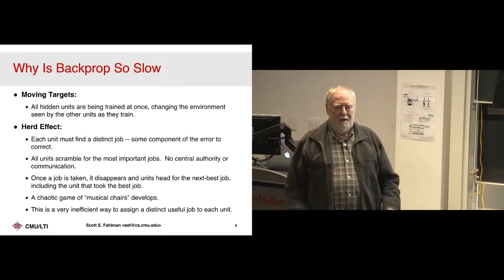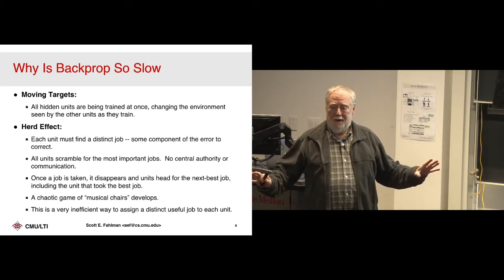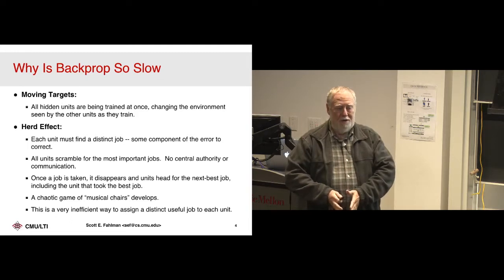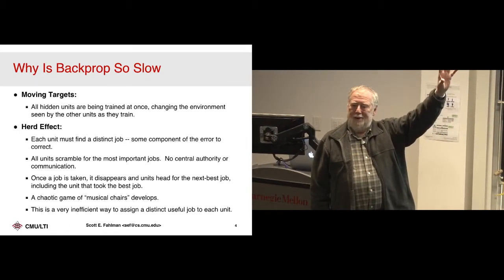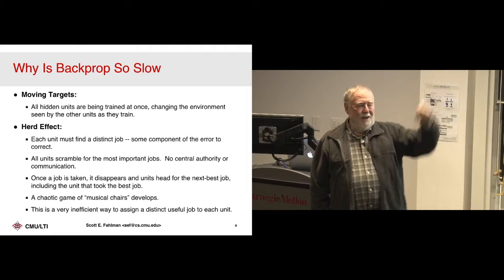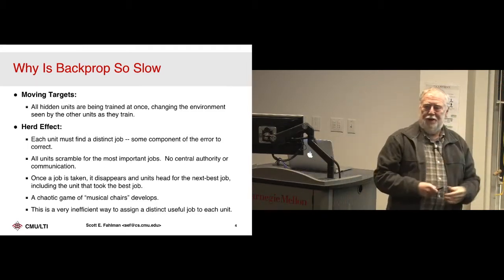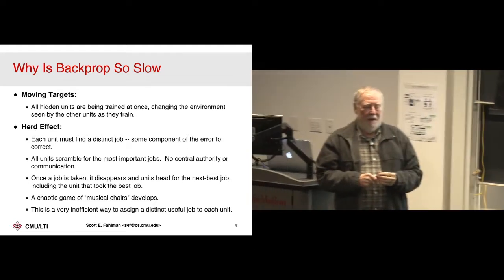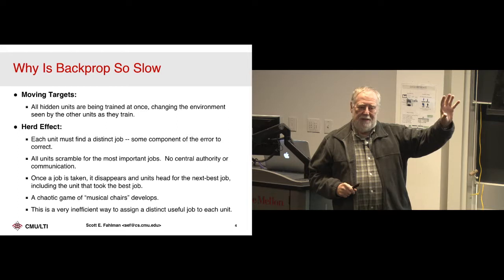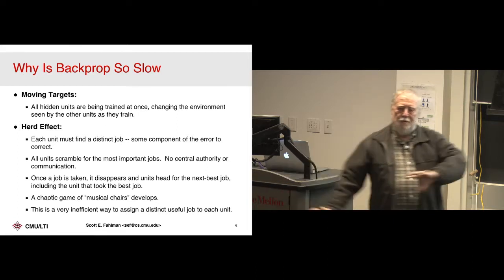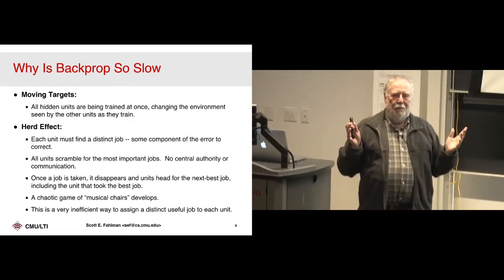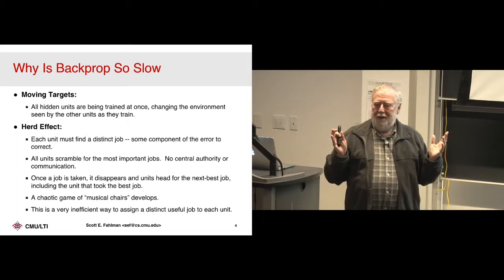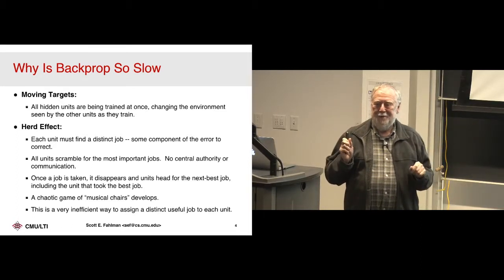If there are multiple hidden units in a layer, you want them all to be doing different jobs. Then you can cancel six components of the error instead of just one six times. There's no central authority saying 'here's your piece of the error.' All they're seeing is the error components coming back and they're adjusting their weights accordingly. What happens is there'll be a big component — sort of the first eigenvector of the error — and they all go charging over that way from different starting spots.